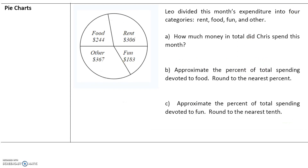Here's another example. Leo divided this month's expenditures into four categories: rent, food, fun, and other. Part A asks how much money in total did Leo spend this month? Leo spent a total of $244 plus $306 plus $367 plus $183. Making sure we include the units, Leo spent a total of $1,100.